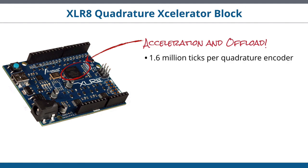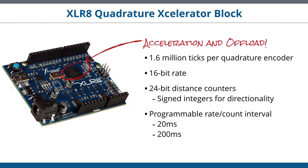A few key features for our quadrature block: it supports up to 1.6 million ticks per quadrature encoder, up to a 16-bit rate counter. In addition, it has 24-bit distance counters which are signed integers so we can keep track of directionality. We offer a programmable rate and count interval of 20 milliseconds or 200 milliseconds. You can really see the difference it makes when you hook it up and you're able to do all that quadrature processing in hardware, completely offloading it from the microcontroller. I just wanted to give everybody a visual of one way that this can work. Hope this helps.